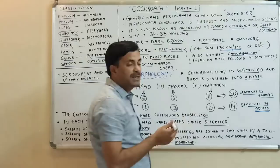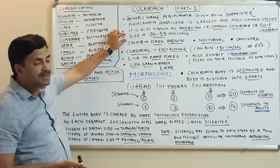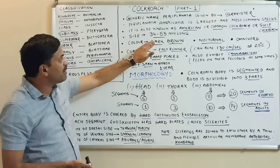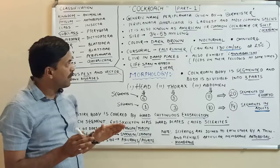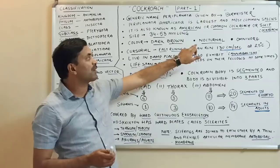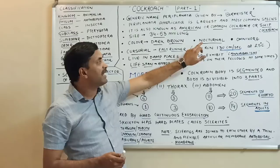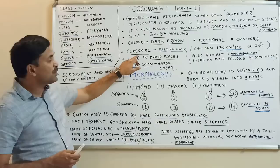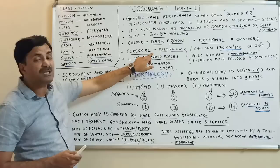Its size is between 34 to 53 mm long. Its color is dark brown to blackish, but generally it is dark brown. It is nocturnal — cockroaches generally come out at night. They are omnivores, meaning they can eat anything they get. They are also described as cursorial, meaning they are very fast runners.